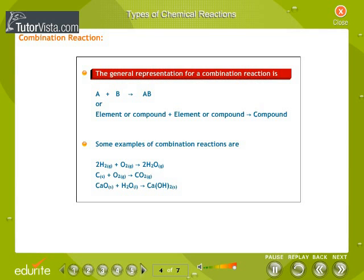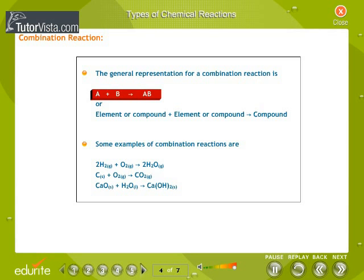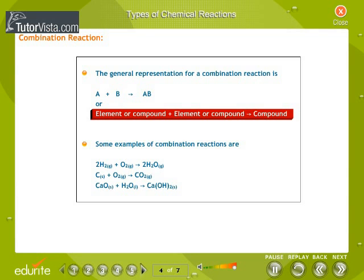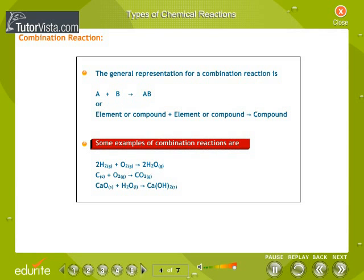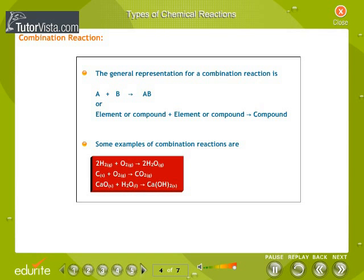The general representation for a combination reaction is: A + B → AB. A combination reaction involves two or more substances combining to form a more complex product. The reactants may be elements or compounds, and the product will always be a compound. Examples include: formation of water from H₂ and O₂, burning of coal with oxygen to give carbon dioxide, and calcium oxide (CaO) reacting vigorously with water to produce slaked lime, calcium hydroxide.